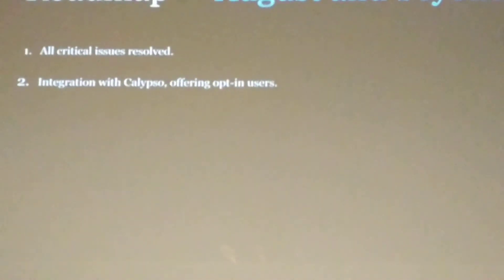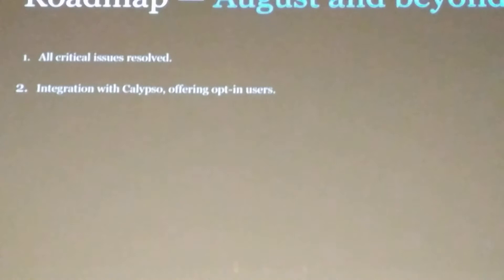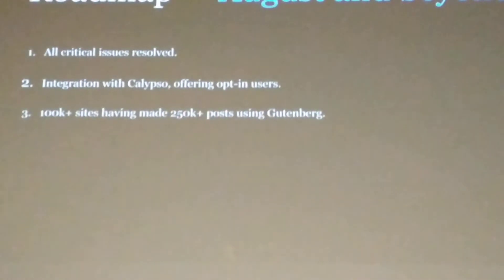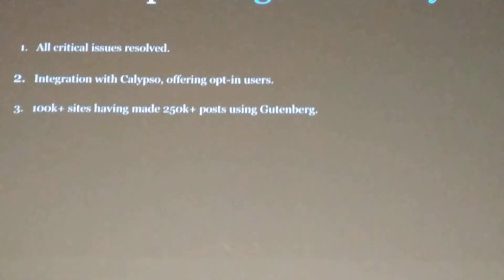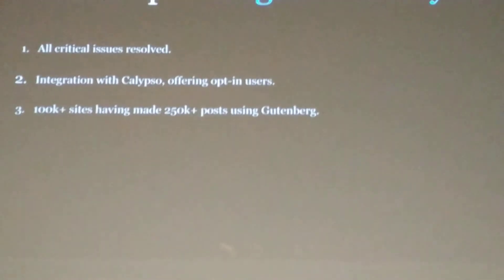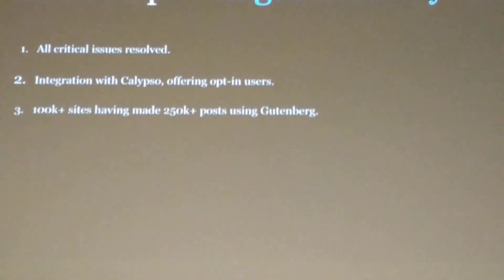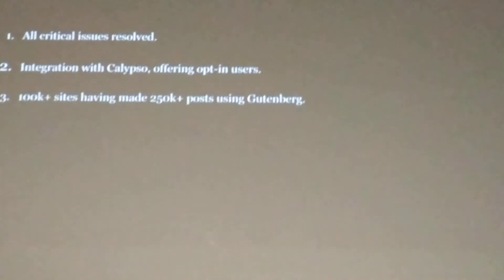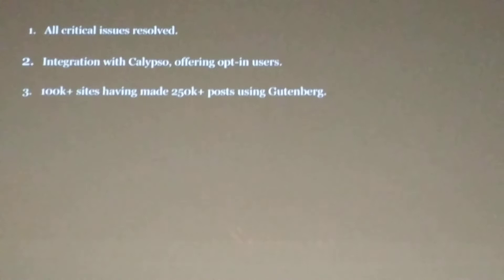In August and beyond, we'll have all critical issues resolved. It'll be integrated with the Calypso interface on WordPress.com, where the majority of people use it. I want to have 100,000 sites active with Gutenberg — over 10x where it is today — and 250,000 posts created. I think with a quarter million posts, we'll be able to say that a lot of the bugs will be worked out.